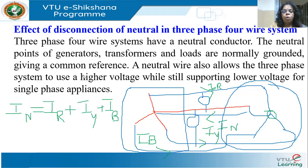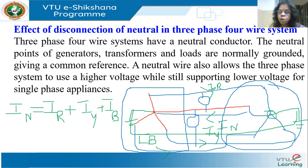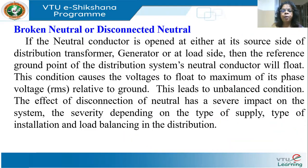A neutral wire allows the three-phase system to use a higher voltage while still supporting lower voltage for single-phase appliances. Between line and neutral you get the phase voltage — 1/√3 of the line voltage — so you can get a lower voltage with the same system. That's the advantage of a three-phase four-wire system.